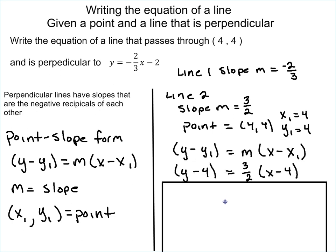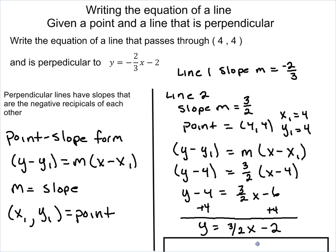So we're going to plug into the equation, so y minus 4 equals 3/2 times x minus 4. Distribute the 3/2 through, so y minus 4 equals 3/2x minus 6. Add the 4 to both sides, so we end up getting y equals 3/2x minus 2.